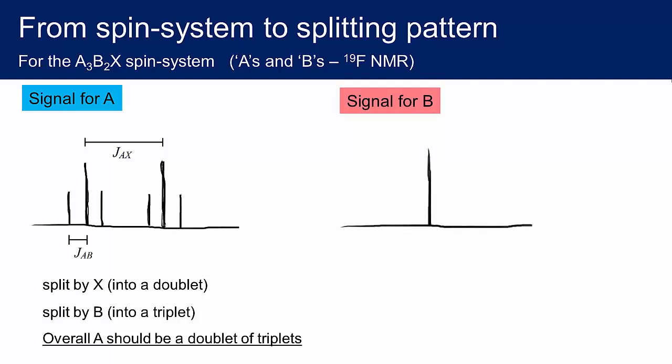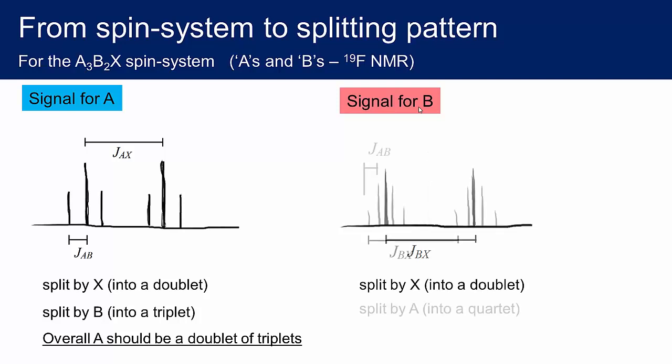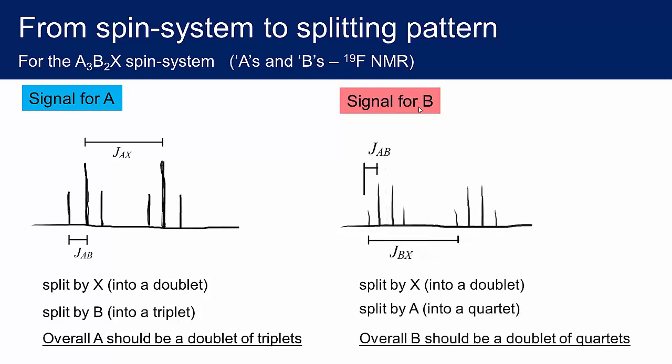Also in the 19F NMR is a signal from the axial B atoms. B must couple to X and will be split by this single spin half nuclei into a doublet. And the B atoms will also couple to the three A atoms, giving a binomial quartet. So we predict a doublet of quartets. And we can extract the BX and the AB coupling constants from this signal. The coupling constant JAB is the same in both the A and the B signals.